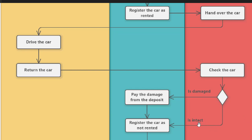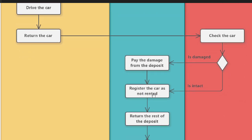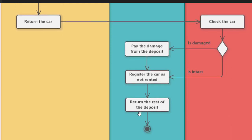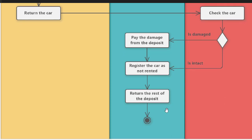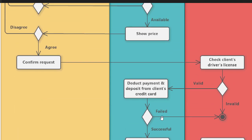If the car is intact — not damaged — the system registers it as no longer rented, meaning it has been returned. After that, the rest of the deposit is returned to the client, and the activity diagram terminates with the termination sign.